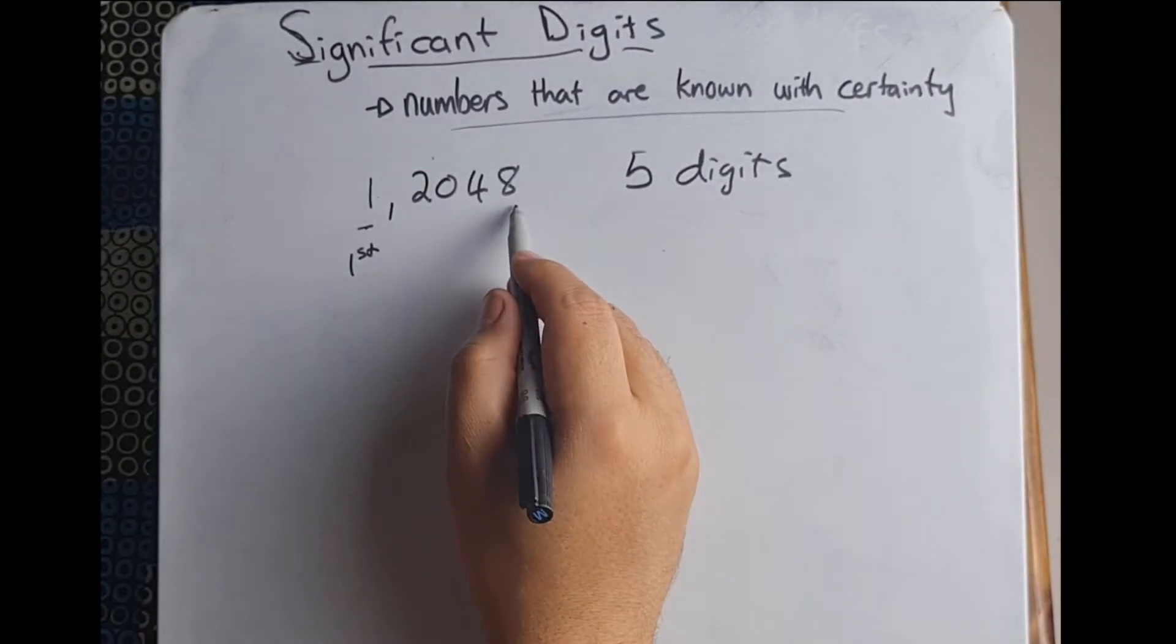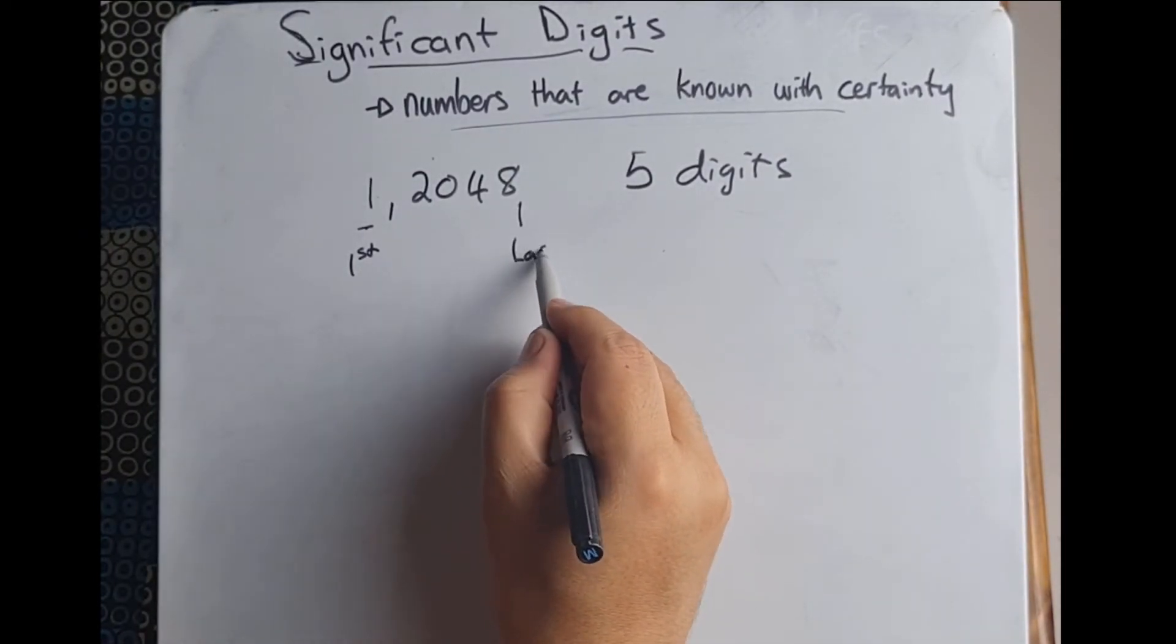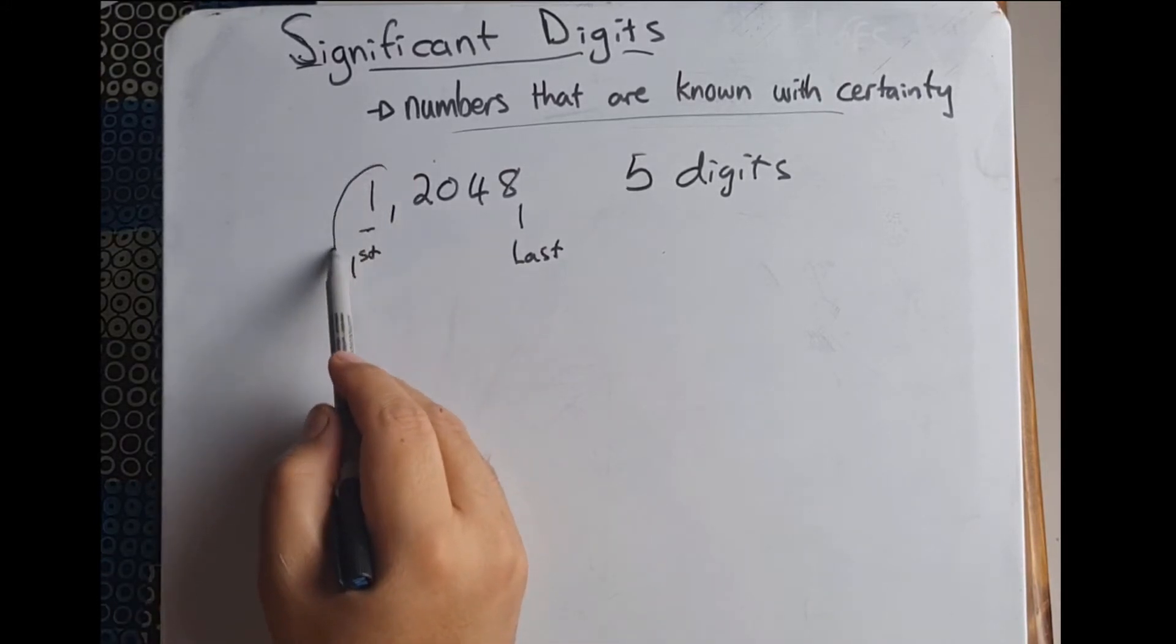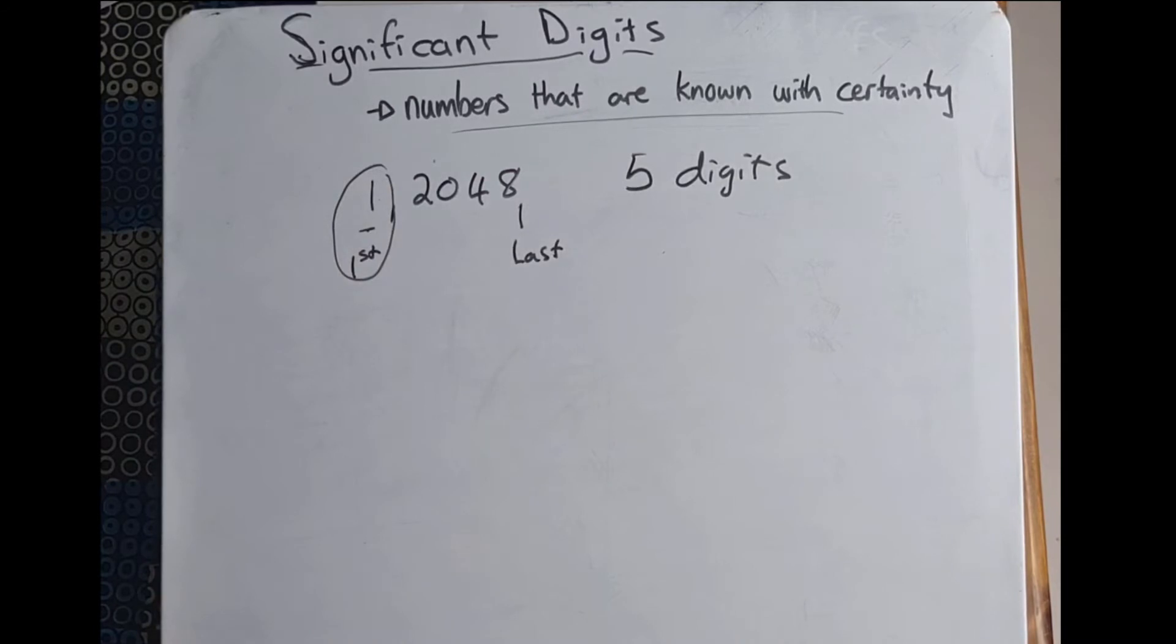With one being the first and eight being the last. So when reading from left to right, the first significant digit in a number is the first non-zero digit, or our one over here. All digits after that are also considered to be significant.